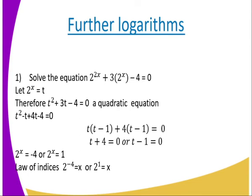Another example involves forming quadratic equations from further logarithms. Solve: 2 raised to power 2x plus 3 times 2 raised to power x minus 4 equals 0. We let 2 raised to power x equal t, so the equation becomes t squared plus 3t minus 4 equals 0. Factorising: (t plus 4)(t minus 1) equals 0.